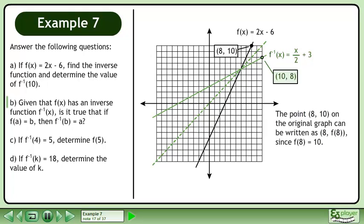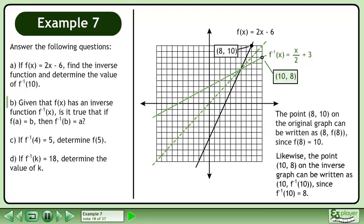The point 8, 10 on the original graph can be written as the ordered pair 8, f at 8 since f at 8 equals 10. Likewise, the point 10, 8 on the inverse graph can be written as the ordered pair 10, f inverse at 10 since f inverse at 10 equals 8.